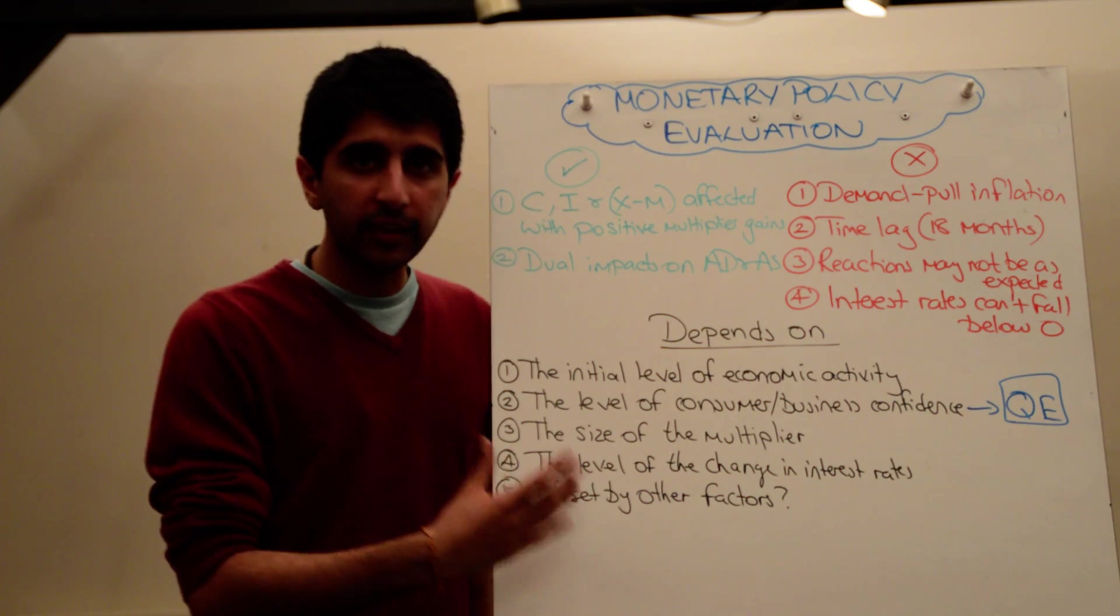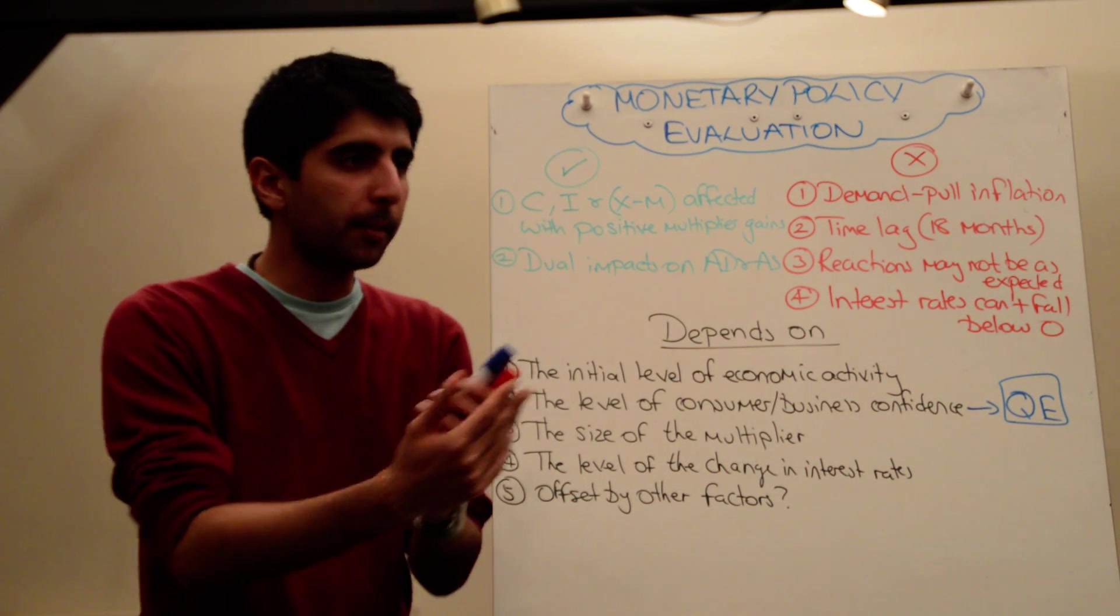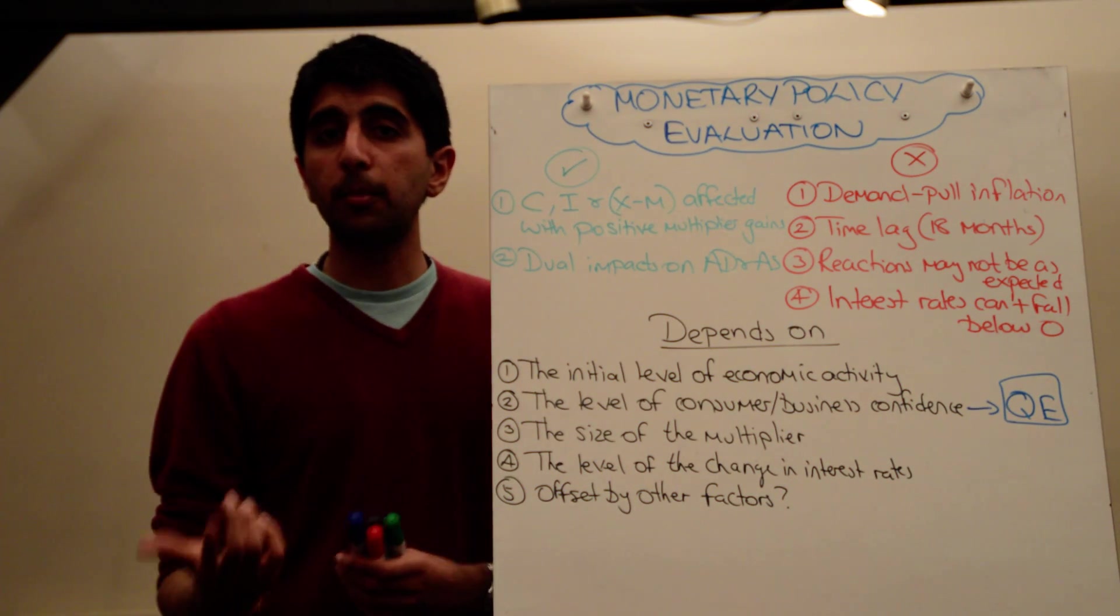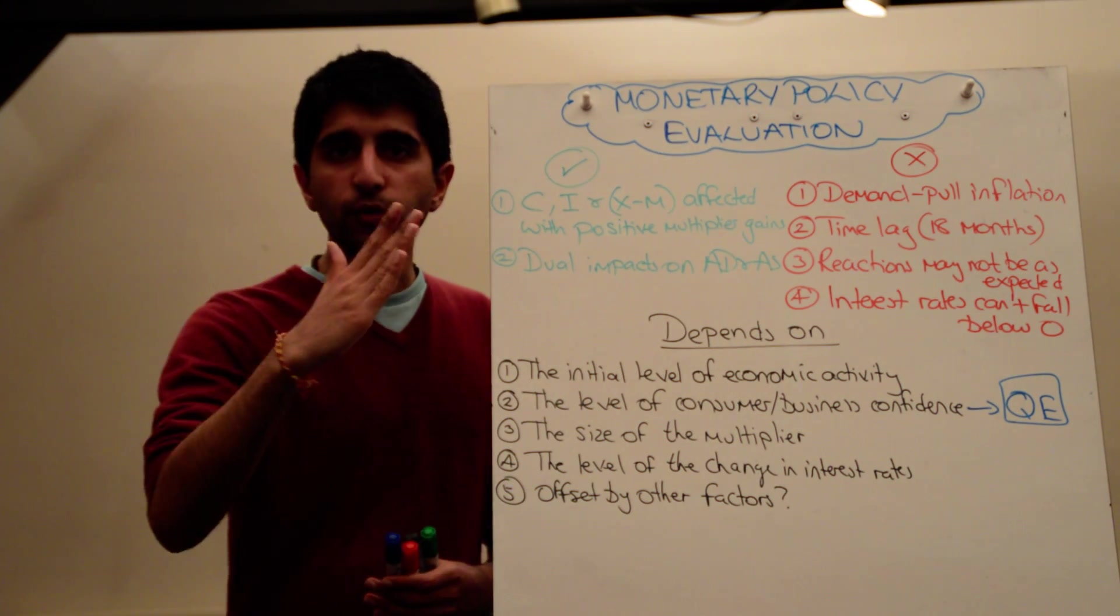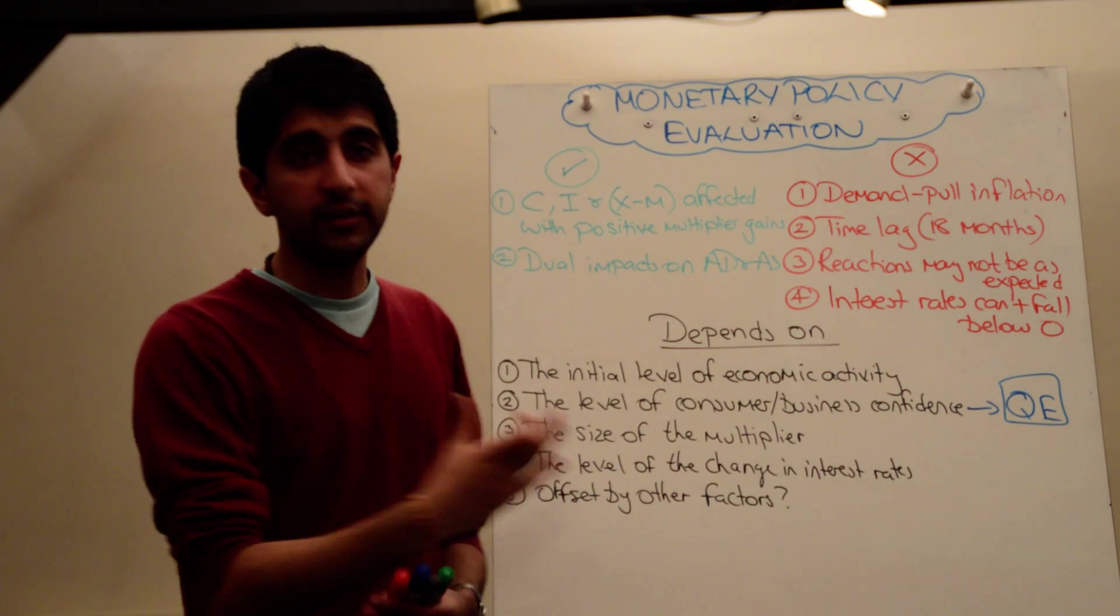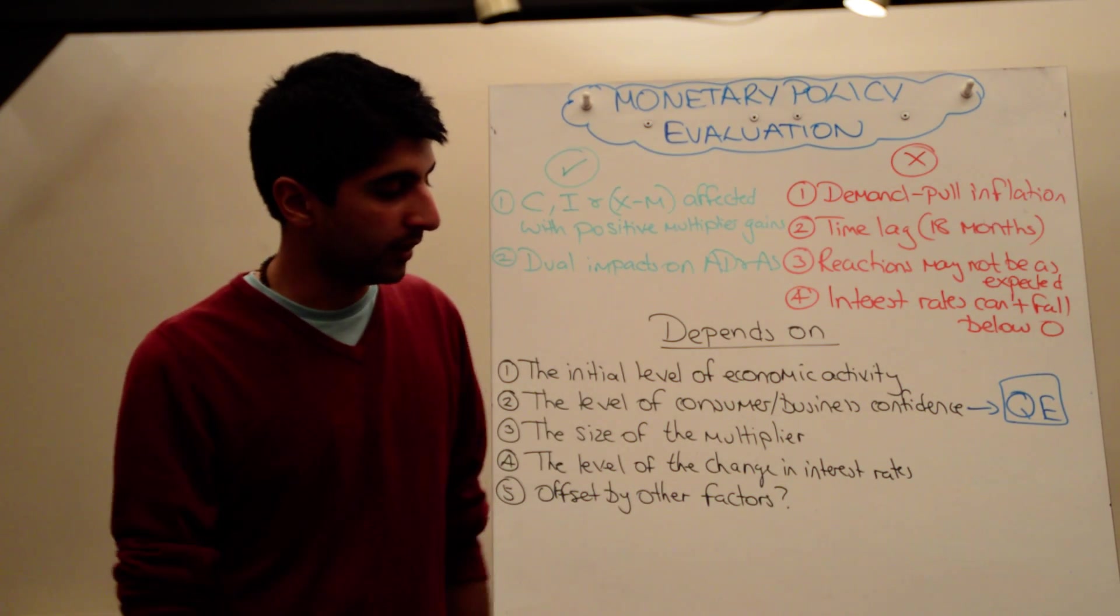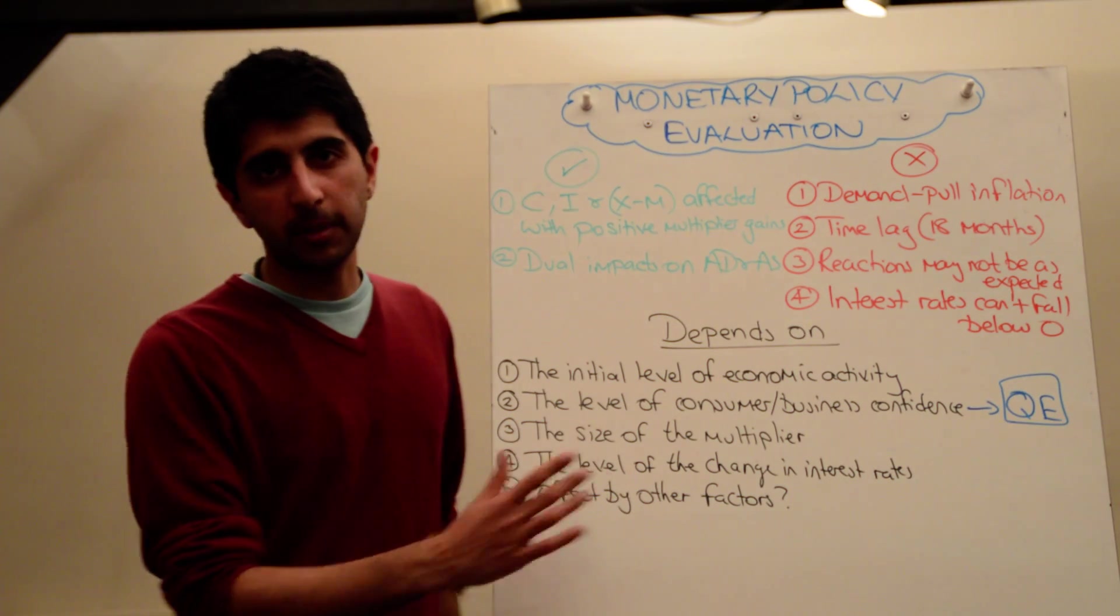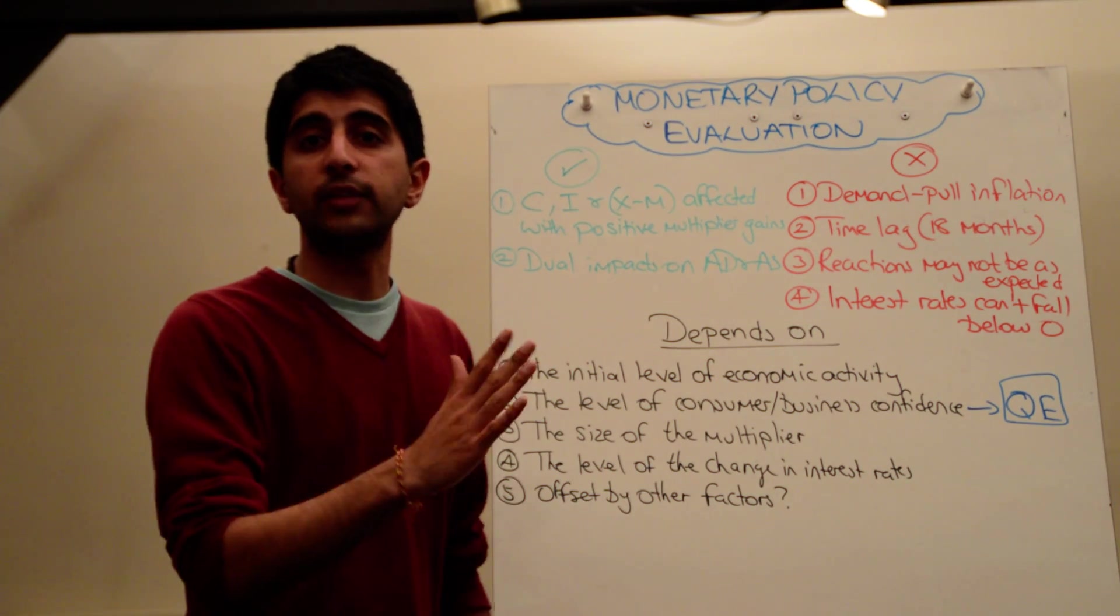And it also depends on whether expansionary monetary policy might be offset by other factors. Maybe offset by contractionary fiscal policy, in which case that might reduce aggregate demand and reduce the gains that we might have seen otherwise from expansionary policy. Or maybe some other factors might have reduced the effect of expansionary policy, something else that might have reduced aggregate demand.